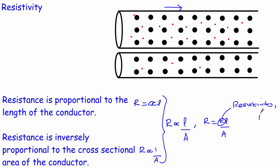Resistivity has its own symbol — the Greek letter rho. If we rewrite this, we end up with a link between resistance and resistivity: R equals rho L over A. So if we know the length of a conductor, the area of a conductor, and the resistivity, we can calculate the resistance.